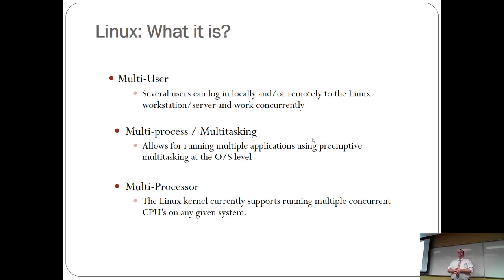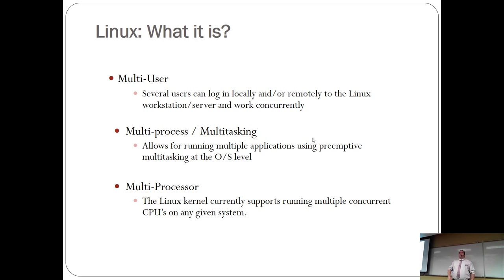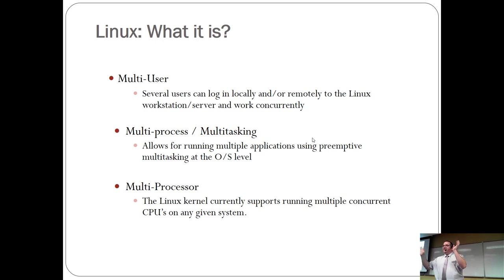You can have computers with more than one processor — that's not the same thing as more than one core. At work we're a software development firm and we have one computer in the building with more than one processor; it costs about $16,000. Linux handles them really well. When you think about it, a lot of the supercomputers out there are now built with Linux — you've got a computer with a thousand CPUs in it running Linux. It's a specialized version, but you can do it.